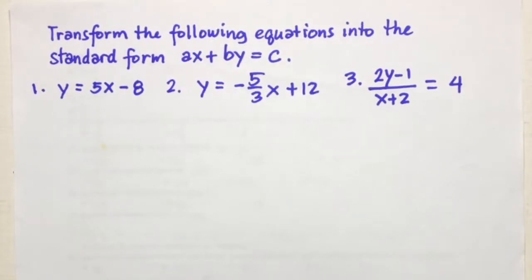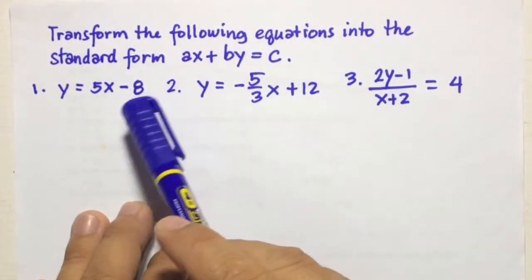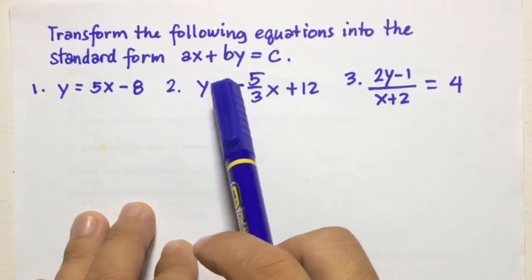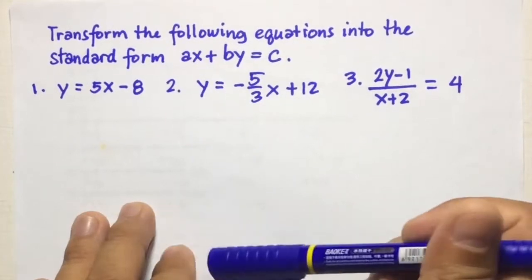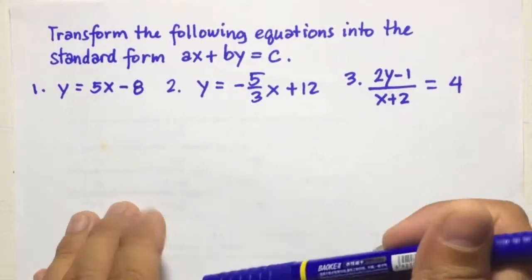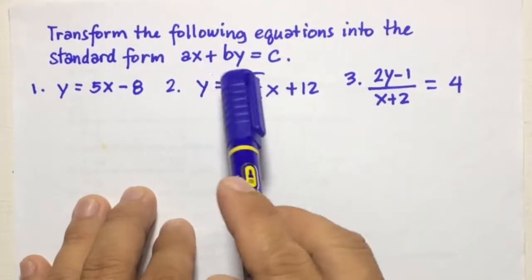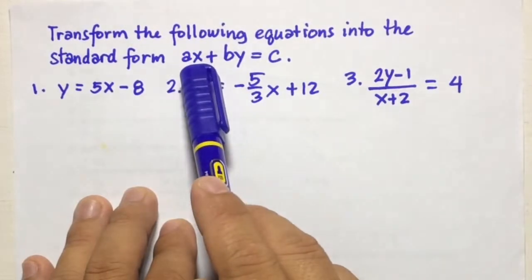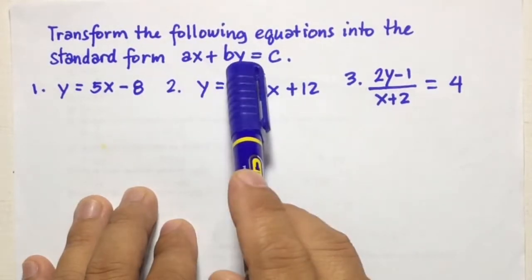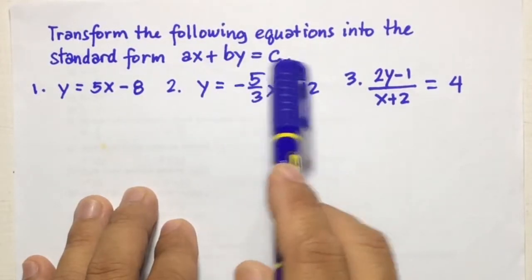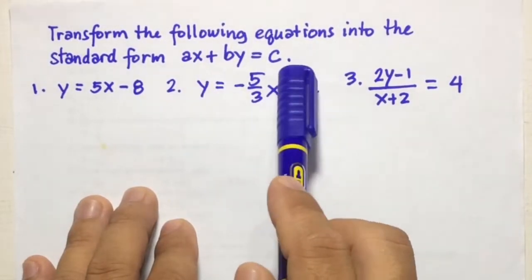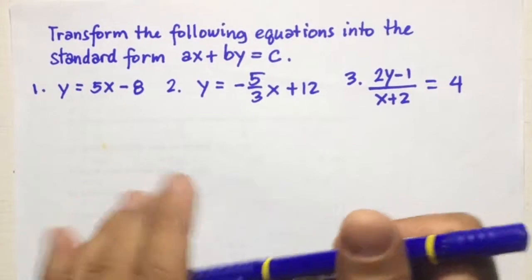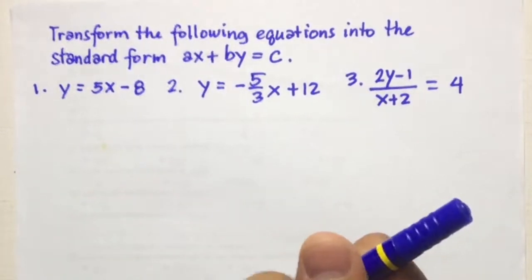Next, transform the following equations into the standard form AX plus BY equals C. In this form, the X and Y terms go on the left side and the constant term goes on the right side.